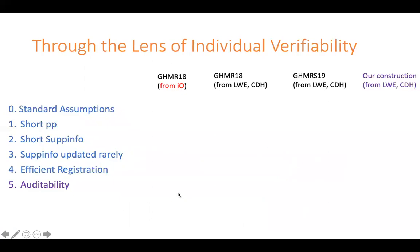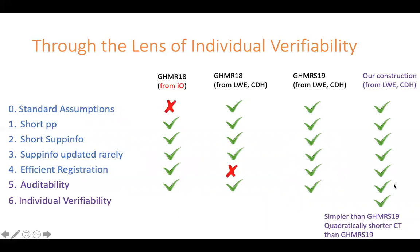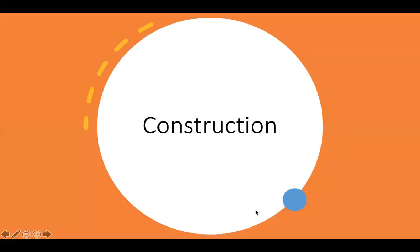Let's have a look at the big picture of what we know. All the previous constructions can be verified by an auditor. Our construction is based on standard assumptions, has all efficient parameters, can also be verified by an auditor, and additionally satisfies this individual verifiability property. Another advantage of our construction is it's simpler than previous constructions and also has shorter ciphertext size. As for the previous constructions — although we don't formally prove it in our paper, we observe that one could use ideas behind our proof and verify algorithms to come up with these algorithms for the previous constructions as well.